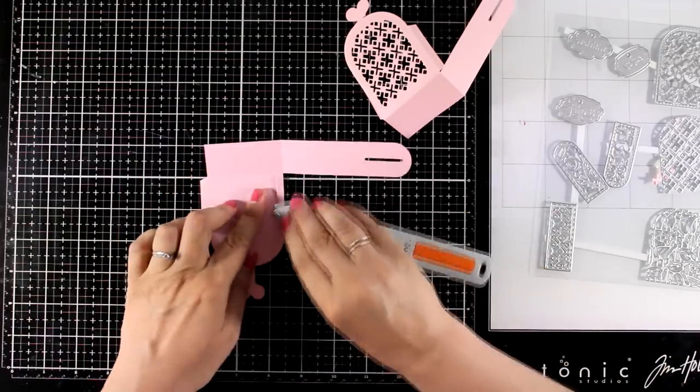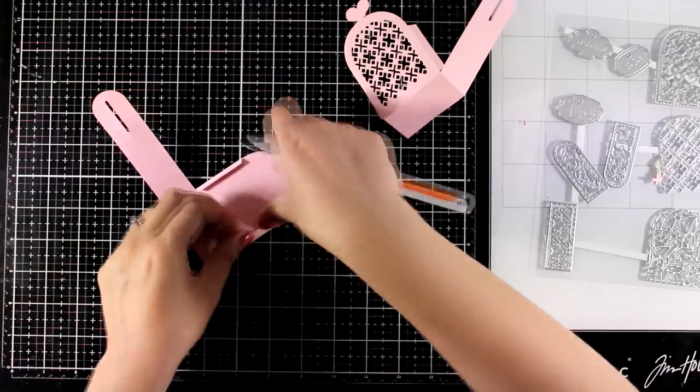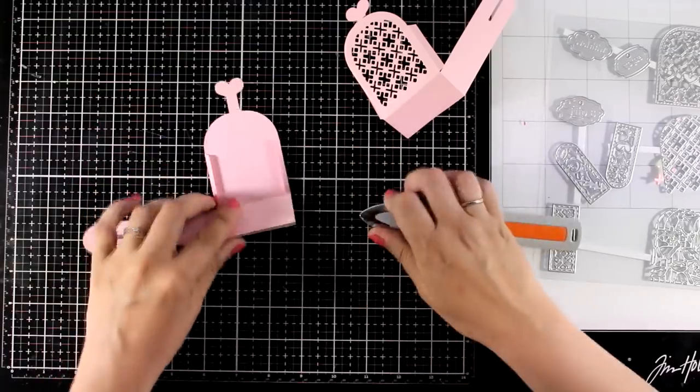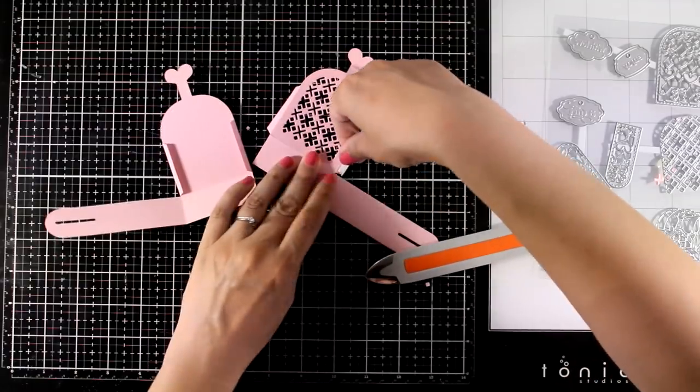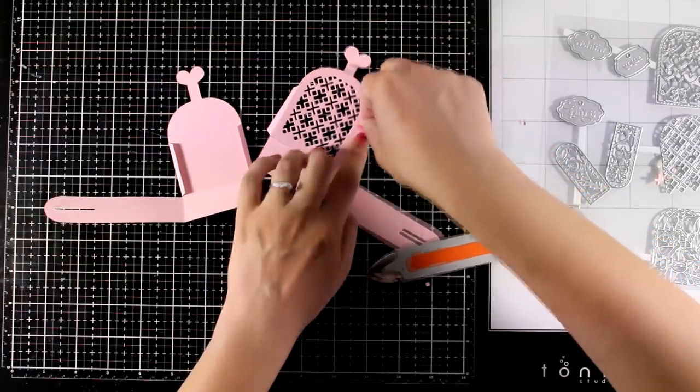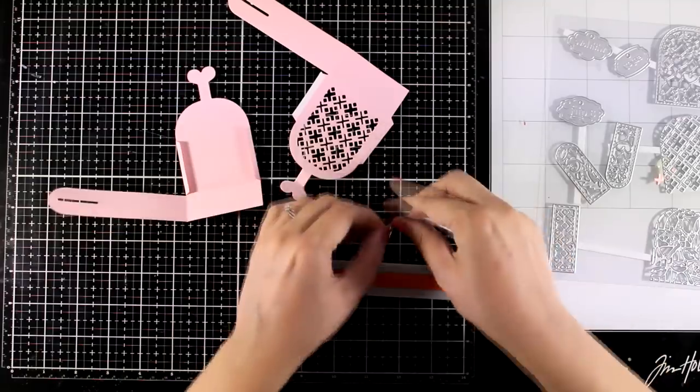Now at this stage I'm just going to reinforce all those scoring lines. I'm using my bone folder for that and with a very thin double-sided tape I'm going to add some pieces only where those flaps are.